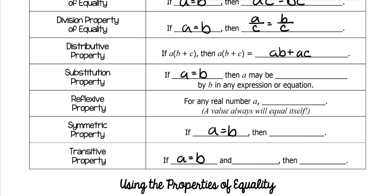The substitution property is a little bit harder to understand. It says when A may be replaced by B. So in other words, if you have a problem like this and you're also told that y equals two, then your next answer you can replace that y with two. I'm putting this two, because that's what y equals, in for this y. That's what the substitution property is — you're plugging something in. If you remember ever plugging stuff in in algebra, that is called substitution.